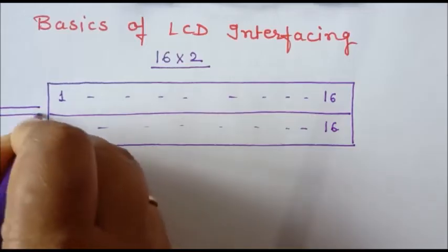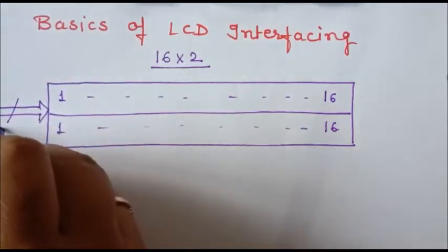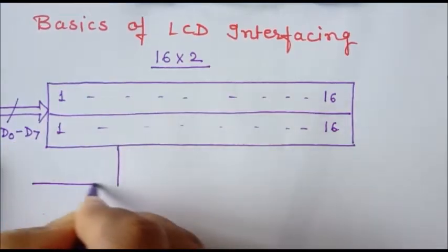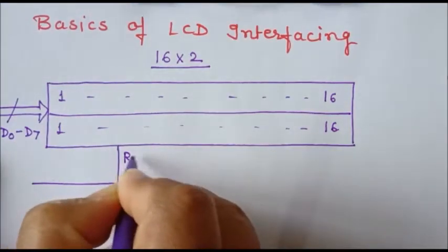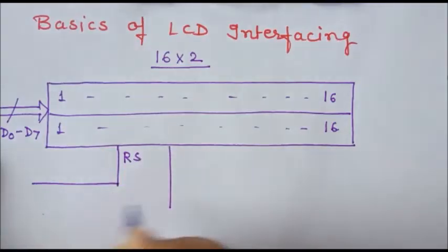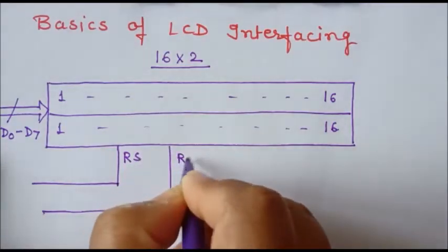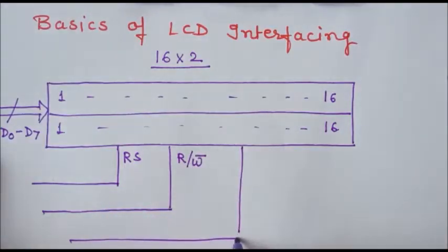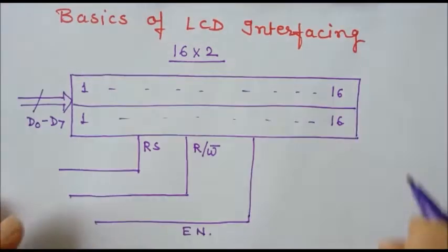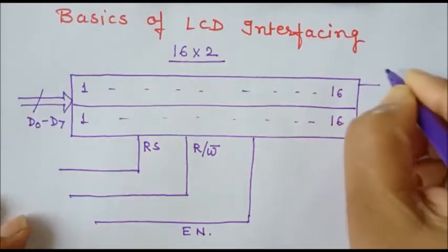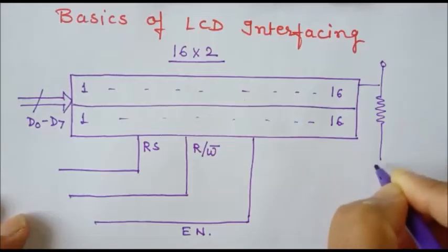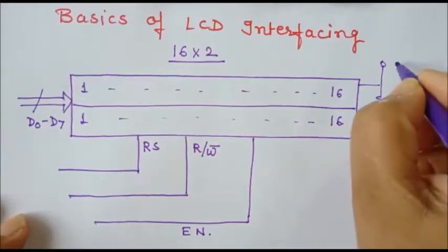The LCD display has an 8-bit data bus called D0 to D7. It also has control signals: the first control signal is RS, the second is R/W bar (read/write), and the third is the Enable signal.